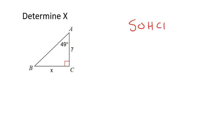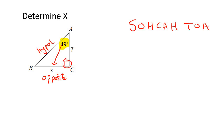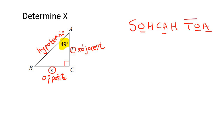Here's another example. We start off with SOH-CAH-TOA, then find the angle they've given you. Go label your triangle: the one opposite the angle is called the opposite, the one opposite the 90 degree is called the hypotenuse, and then the other side is your adjacent. We're looking for x, which is the opposite, and we have the adjacent — so now we'd use tan, because that's got the most information.